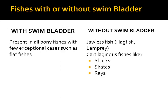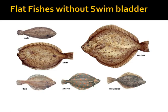The swim bladder may be present or absent in some fishes. In jawless fishes such as lampreys and hagfishes, and in cartilaginous fishes such as sharks, skates, and rays, the swim bladder is totally absent. In bony fishes, the swim bladder is present with a few exceptions, such as flatfishes — for example sole, brill, dab, plaice, flounder, and turbot.